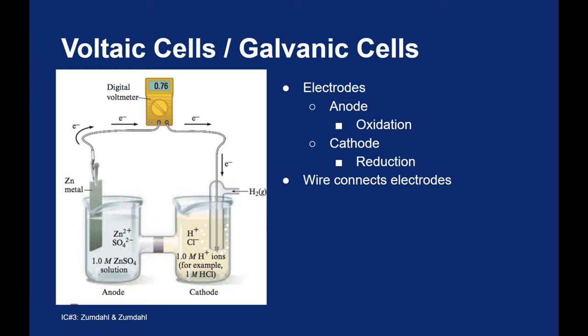You have a wire connecting the two electrodes, which allows the flow of electrons. Otherwise you can't have oxidation or reduction. And the electrons always flow from the anode to the cathode. They always flow from oxidation to reduction.